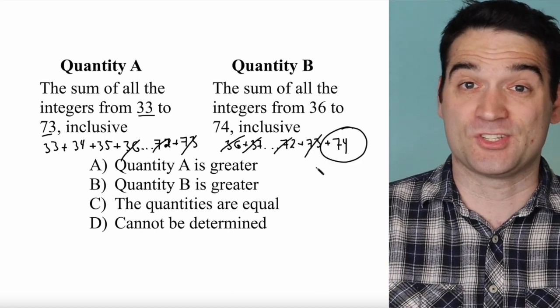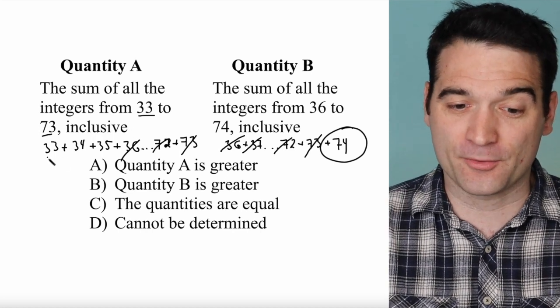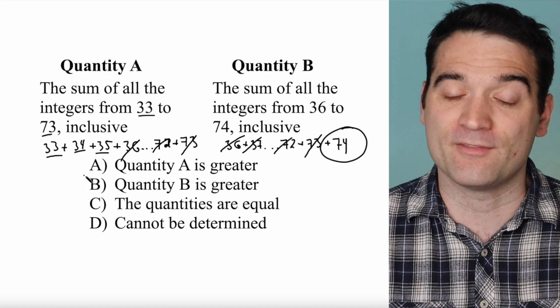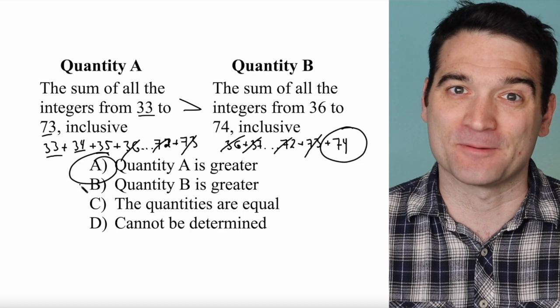I'm left with 74. And then over here I'm left with 33 plus 34 plus 35. Well, clearly Quantity A is greater than Quantity B and that is the correct answer here.